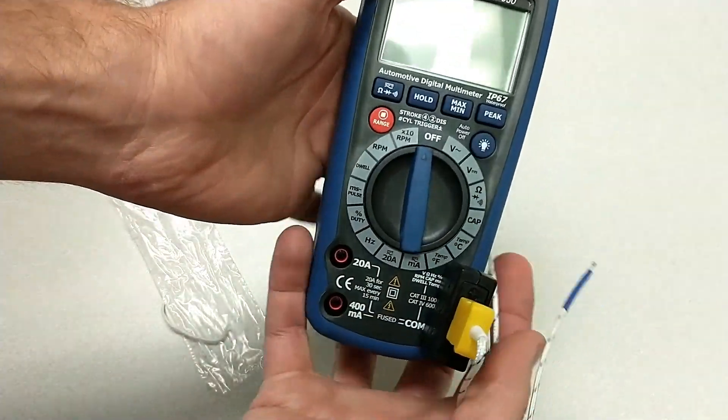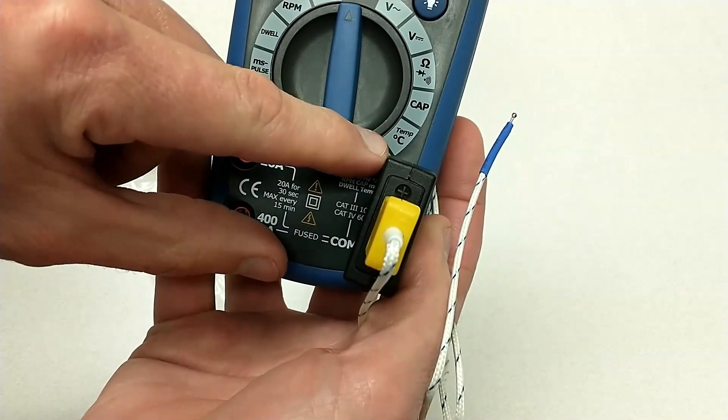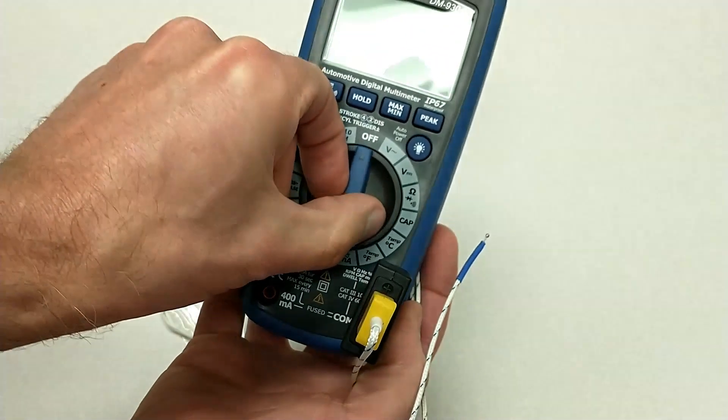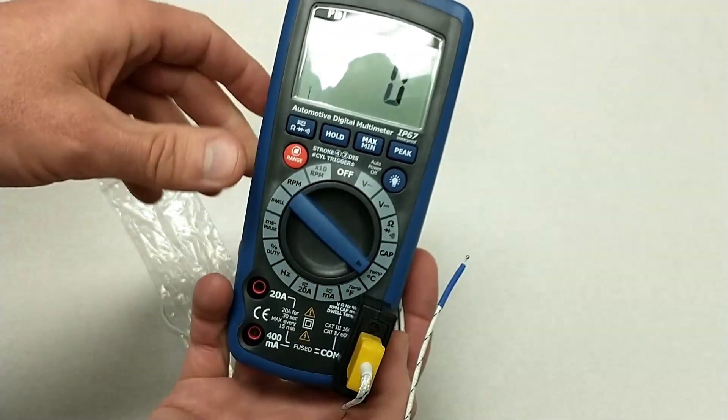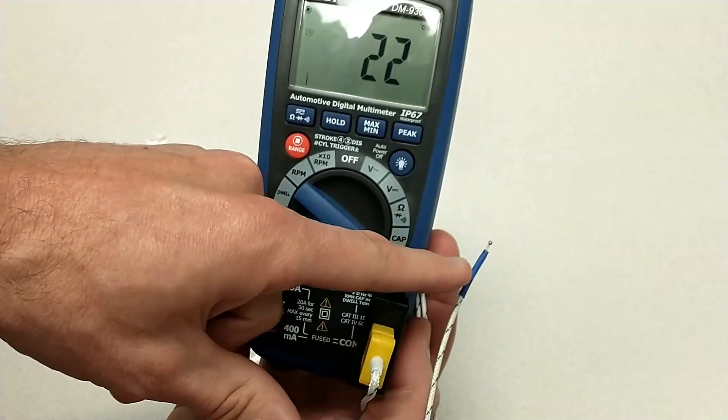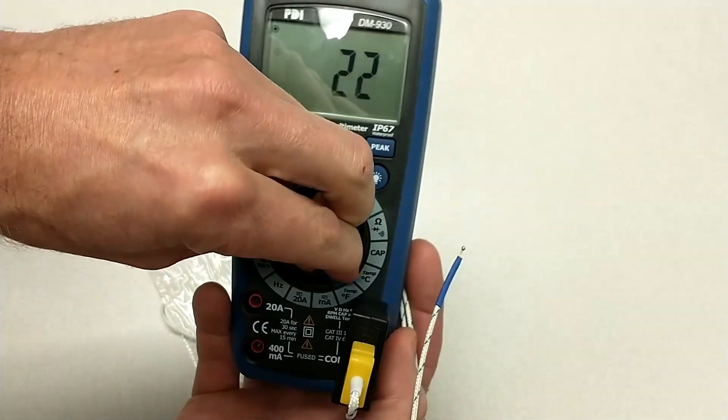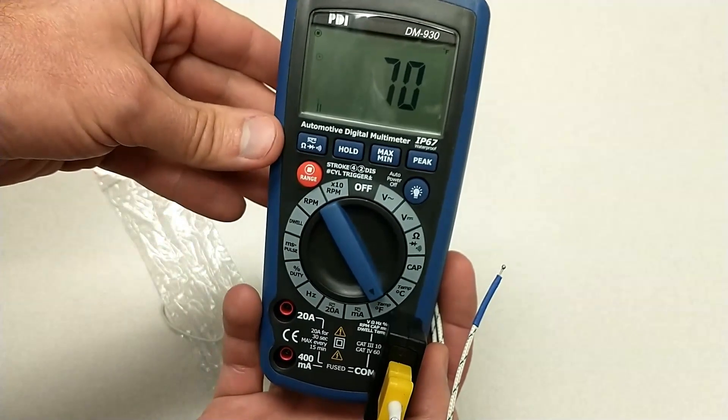You'll notice on the meter that I have a couple of settings down here, one for degrees Fahrenheit and one for degrees Celsius. I would turn the meter to one of those settings, and it will give me a reading of the temperature at the end of that thermocouple. So 22 degrees Celsius or 70 degrees Fahrenheit.